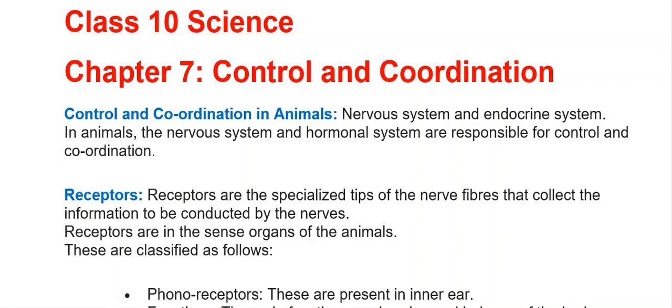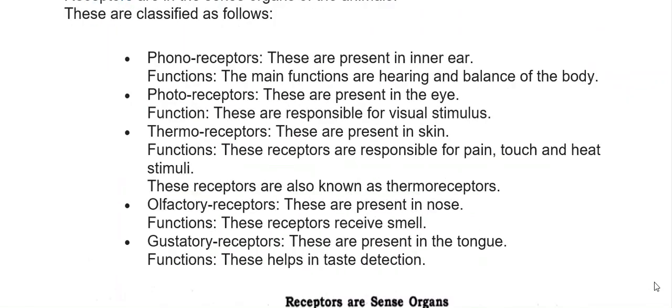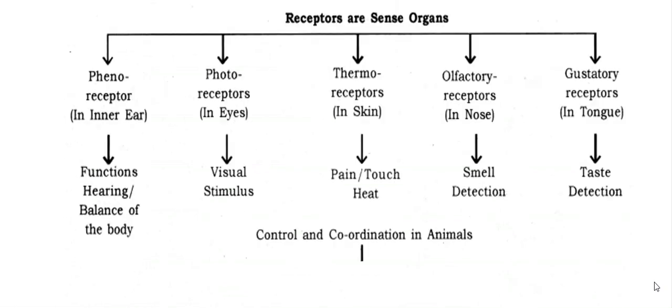Receptors are the specialized tips of nerve fibers that collect information to be conducted by the nerves. They are present in the sense organs of animals. Mechanoreceptors are present in the inner ear; their main functions are hearing and balance. Photoreceptors are present in the eye and are responsible for visual stimulus. Thermoreceptors are present in the skin and are responsible for pain, touch, and heat stimuli. Olfactory receptors are present in the nose and receive smell. Gustatory receptors are present in the tongue and help in taste detection.